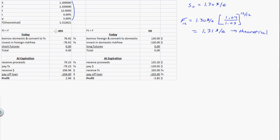But you observe an actual price. Someone is willing to buy or sell euros for $1.35 — just like you'd buy or sell a hamburger for $1.35. So the question is: do you short or go long the futures? It should be priced at $1.31 but it's priced at $1.35, so it's priced too high.